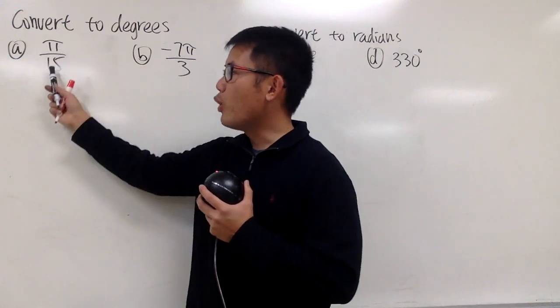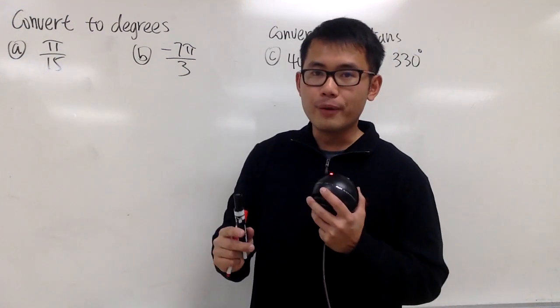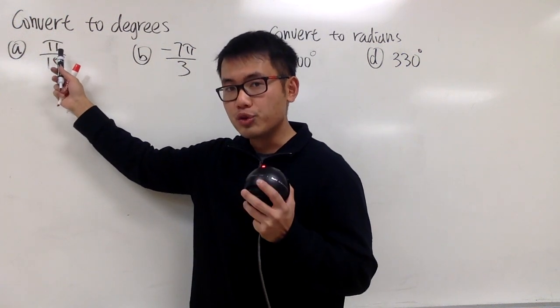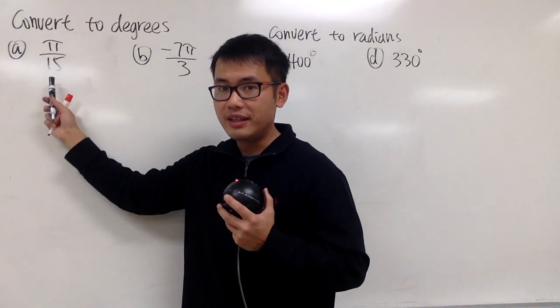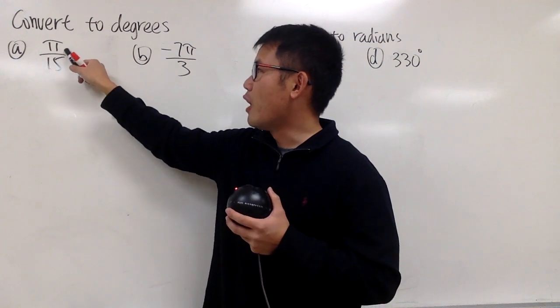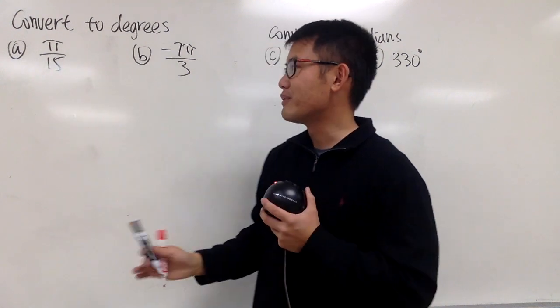Here we have π over 15. And here's the deal. When we see the π, it's usually understood to be we are talking about radians. So you don't have to write down the rad for radians, you don't have to do that.